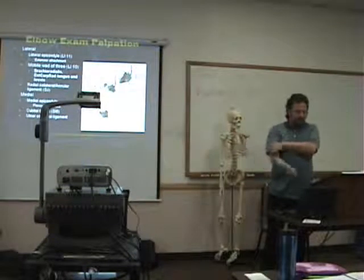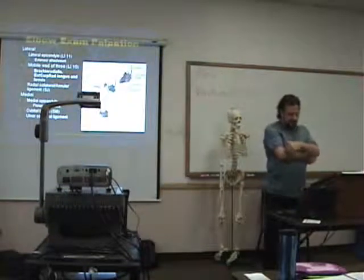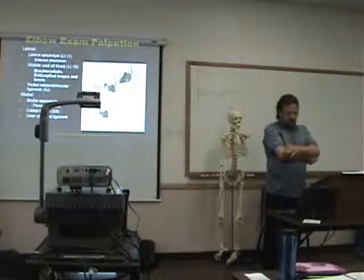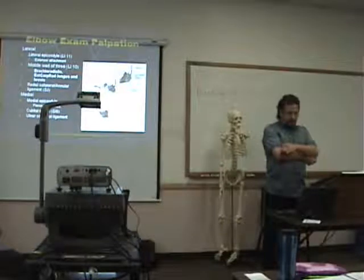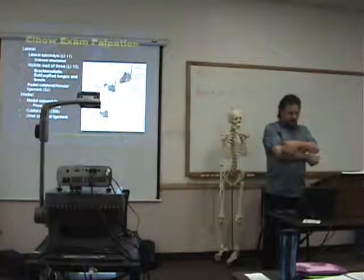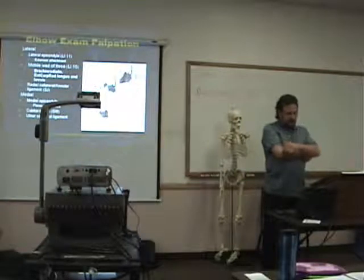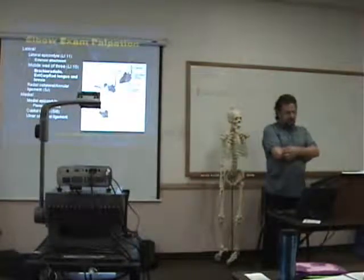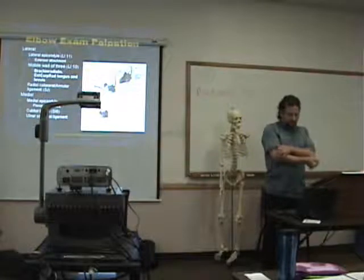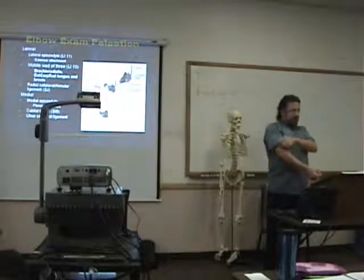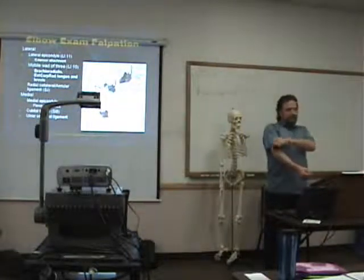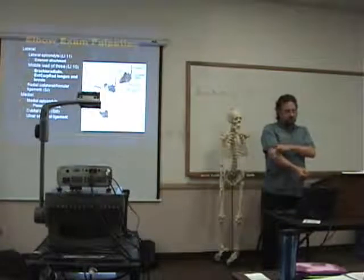When you're palpating on the lateral side, you have the lateral epicondyle. You have the acupuncture points LA-10 and L-11. You have basically the extensor attachment. Then you have the group of three — the brachioradialis, extensor carpi radialis longus and brevis. Then you have the radial collateral and the annular ligament on that lateral side, so you can palpate all of those.